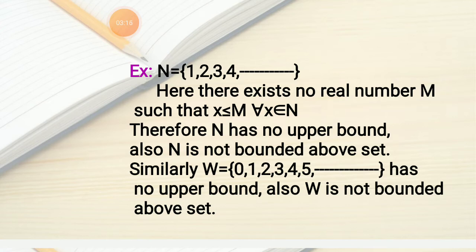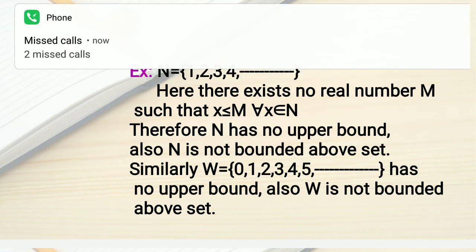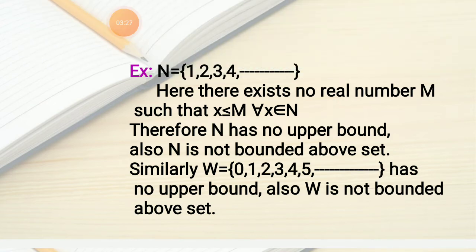If you take whole numbers W = {0, 1, 2, 3, 4, ...}, W contains one more element than N, namely 0. Similarly, W has no upper bound, because we cannot find a real number M such that X ≤ M for all X belonging to W. So W has no upper bound and W is not a bounded above set.